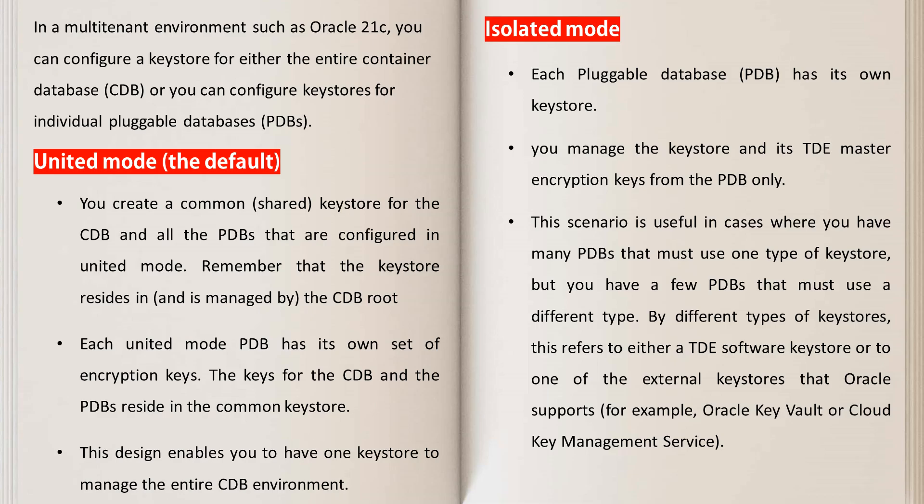In a multi-tenant environment such as Oracle 21c, you can configure a keystore for either the entire container database — called United mode configuration — or you can configure keystores for individual pluggable databases — called isolated mode configuration. You can read the notes on your screen to learn the main differences between United mode and isolated mode settings. For this demonstration, I'll choose United mode configuration.